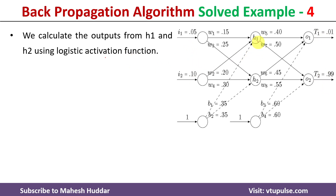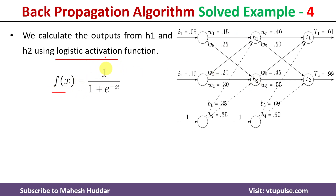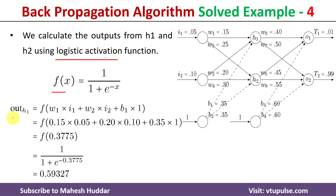First, we calculate the output at the hidden layer neurons. To do this, we first calculate the net input, and then apply the logistic activation function. The logistic activation function is: f(x) = 1 / (1 + e^(−x)), where x is the net input. The output at h1 equals f(net input), and the net input is the sum of weighted inputs: w1·i1 + w2·i2 + b1·1.